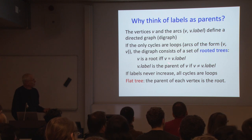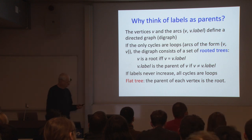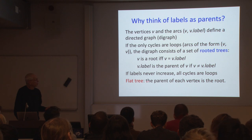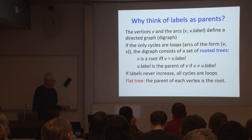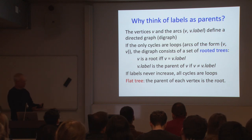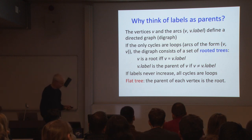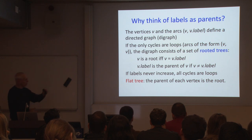We can guarantee no cycles are created if labels always decrease. Ultimately, we want one tree per connected component, and it's going to be flat — the parent of every vertex will be the unique root label of its component. A flat tree is one where there's a root and a possible collection of children but no grandchildren — nothing more than one step from the root. So we want to convert the initial singletons into a set of flat trees, one per component.